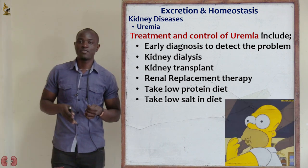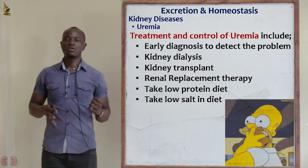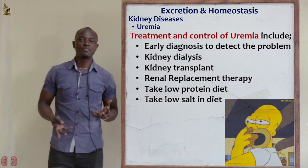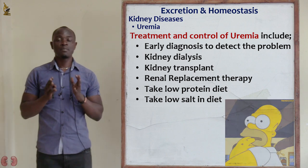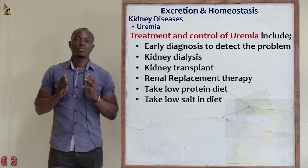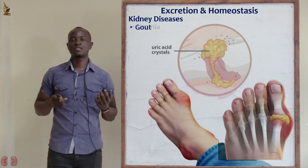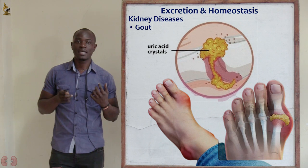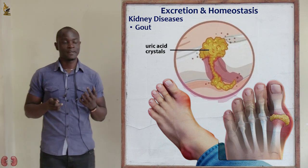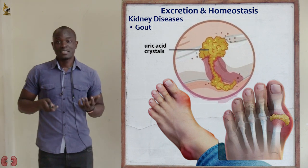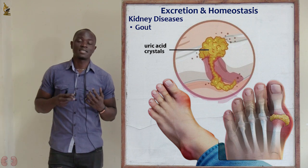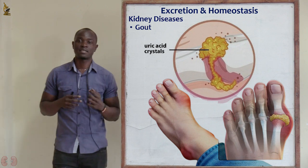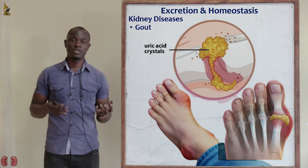Don't fill your plate with a lot of meat, because we're going to see that another disease of the kidney is referred to as gout. Gout is a disease whereby uric acid is deposited on the joints — on the small joints of the phalanges and the metatarsals of the body.